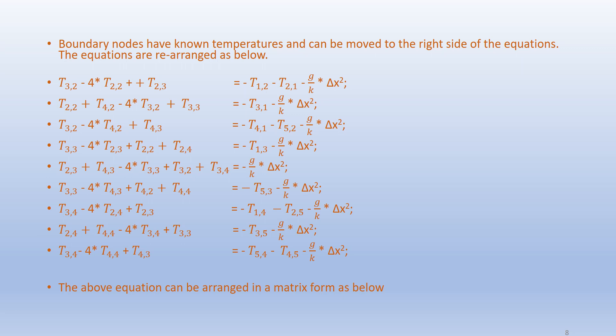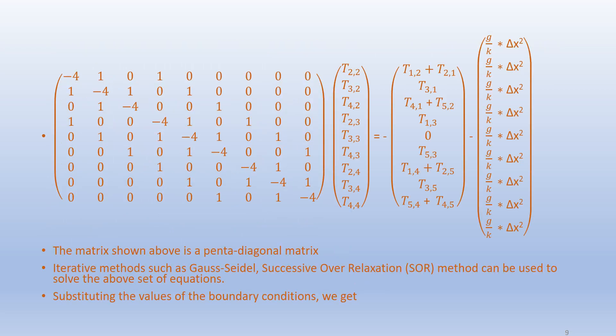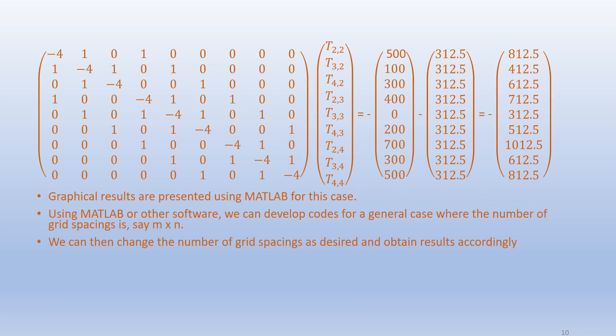The equations are rearranged as shown, and can be written in matrix form. The resulting matrix is a pentadiagonal matrix. To solve this set of equations we can use iterative methods such as Gauss-Seidel or successive over-relaxation. Substituting the boundary condition values and the heat generation terms into the equations gives us a matrix system we can solve.